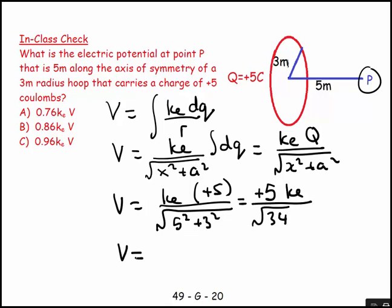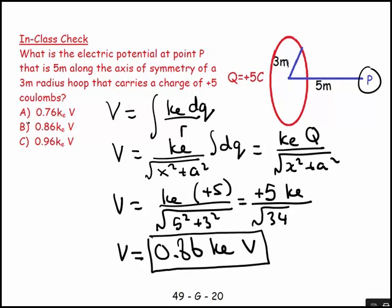And then V is equal to, and in my class I like people to work out the final number. So we have 5 divided by square root 34. So that's going to be 0.86 KE. Leave the KE alone, and that's volts. And so there we have it, nicely finished. It's good. So not so bad on the example that we chose. There we have it. It's good. Thank you.